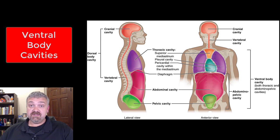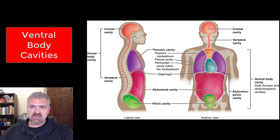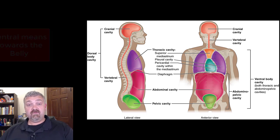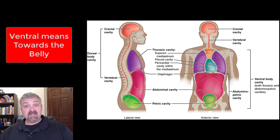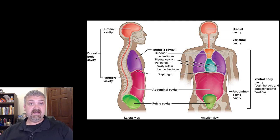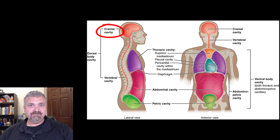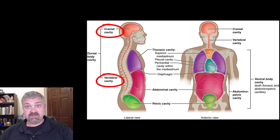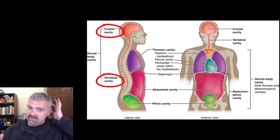There's actually some discussion or argument about whether or not the dorsal body cavities technically exist. So I'm just going to mention them, then we'll spend all of our time on the ventral body cavities. Ventral means towards the front, towards the belly really. Dorsal means towards the back. So your dorsal body cavities, if they exist, are the cranial cavity where your brain is and the vertebral cavity where your spinal cord is. So let's just leave that there.